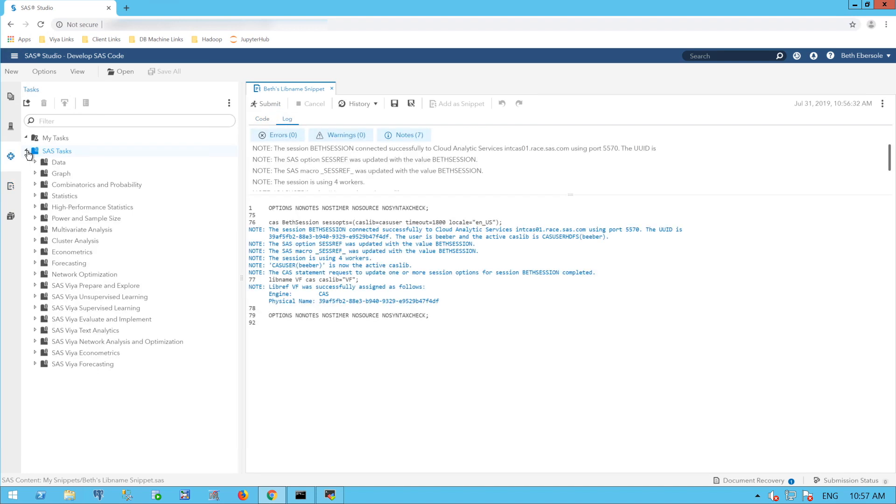When I open SAS Tasks, I see Forecasting here. This would operate on the compute server. This will not operate in CAS. This is actually SAS 9 code behind the scenes of this task. What I want to use is SAS Visual Forecasting. I open that, and I see Time Series Exploration. That's the one I'll click on.